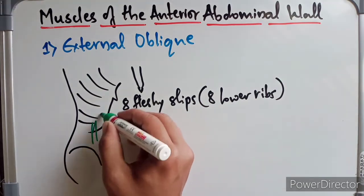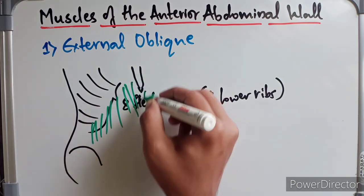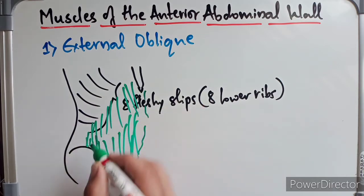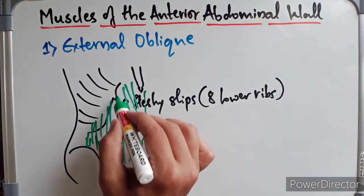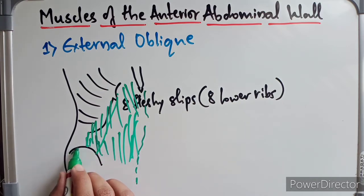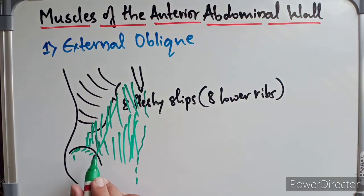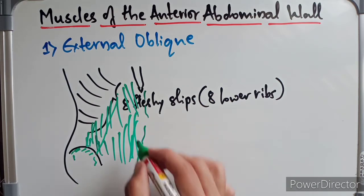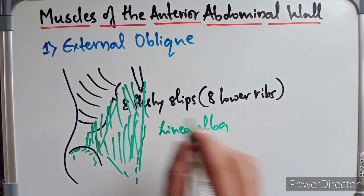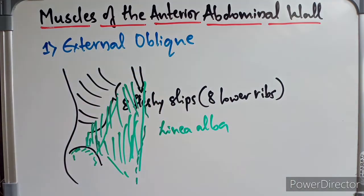The posterior most fibers are inserted into the outer lip of the anterior two-thirds of the iliac crest. The remaining fibers pass downward and forward to be inserted via a broad aponeurosis into the linea alba. All of the remaining fibers form into a broad aponeurosis and insert into the linea alba.